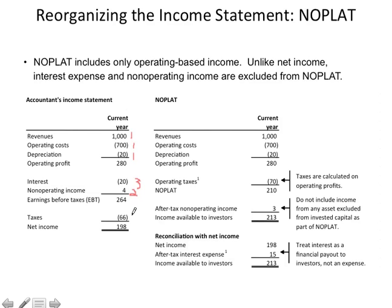Non-operating income came from equity investments on the balance sheet — labeled a two — so non-operating income on the income statement is also a two. Taxes are a trick: they're a one, a two, and a three. We're going to split out the tax effects into each area. We'll end up with the same total taxes, but we'll look at the tax effect on each area of the firm.